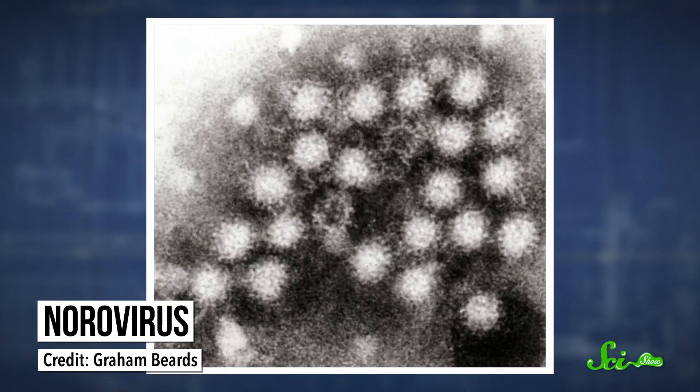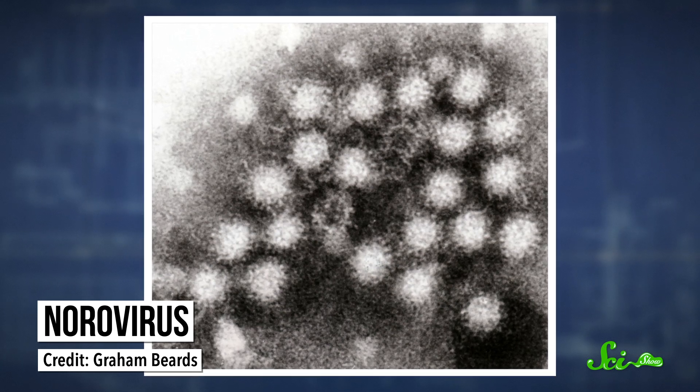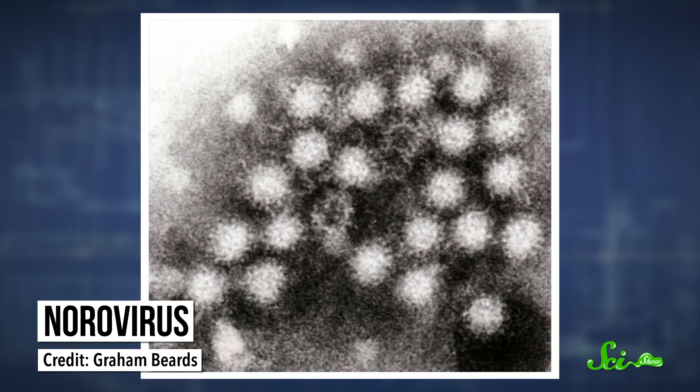The number one cause of food poisoning in the US is norovirus, which causes around half the cases according to the CDC. Viruses are minimalist microbes—they're basically some genetic material with a protein coat. So they can't reproduce or do much on their own at all. They need a host cell.